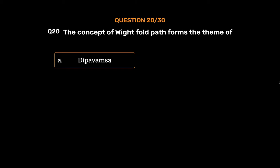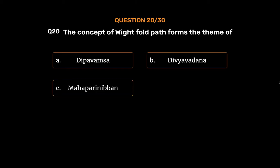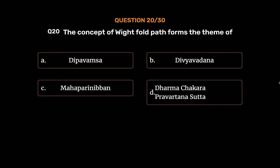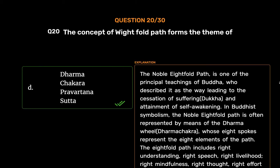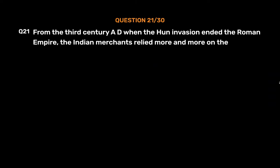Question number twenty: The concept of the Noble Eightfold Path forms the theme of — Option A: the Pavamasutta, Option B: Divyavadana, Option C: Mahaparinibbana Sutta, Option D: Dhammacakkappavattana Sutta. The correct answer is Option D. The Noble Eightfold Path is one of the principal teachings of the Buddha, describing the way to cessation of suffering (dukkha) and self-awakening. It is represented by the dharma wheel (dharmachakra) with eight spokes, and includes right understanding, right speech, right livelihood, right mindfulness, right thought, right effort, and right concentration.